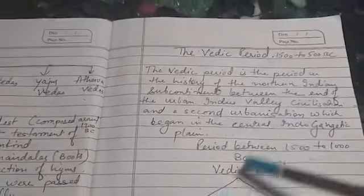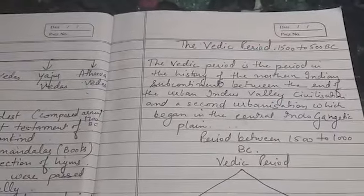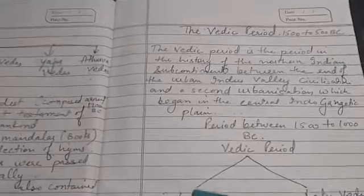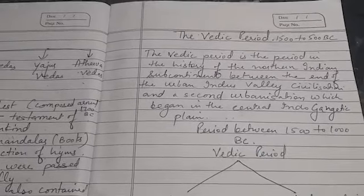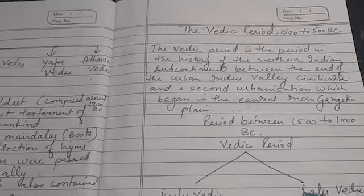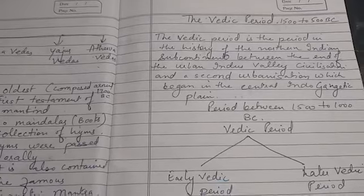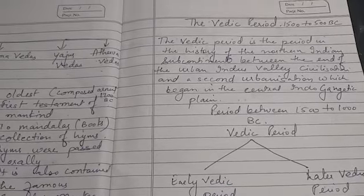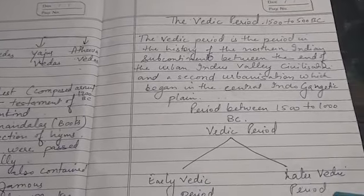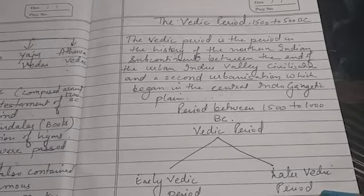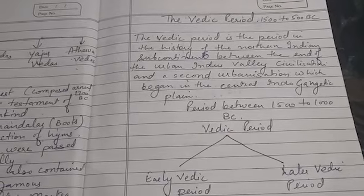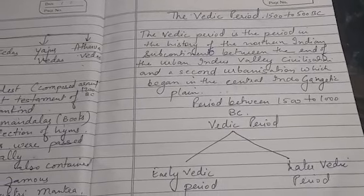The Vedic period is divided into two parts. The first part we call the early Vedic period and the second we call the later Vedic period. The early Vedic period is from 1500 to 1000 BC, and the later Vedic period is from 1000 BC to 500 BC.